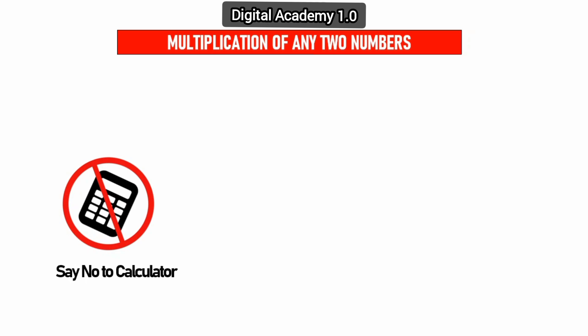Here we have two numbers: 98 and 45 to be multiplied with each other. There are two steps.